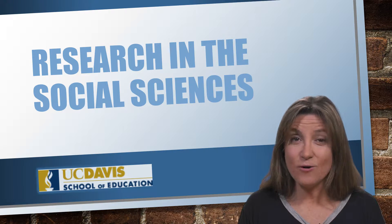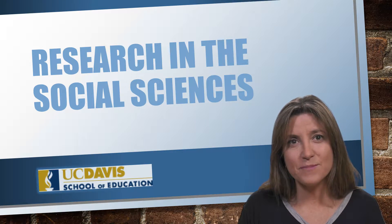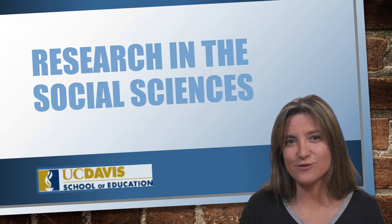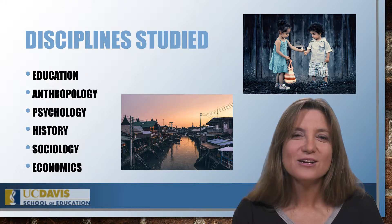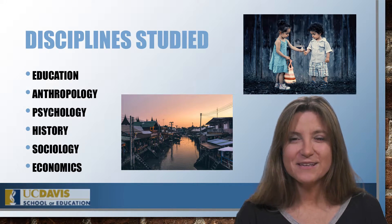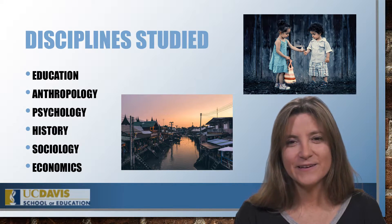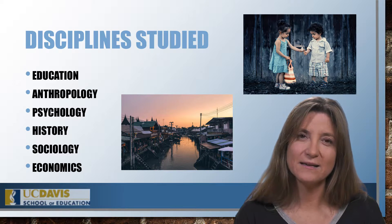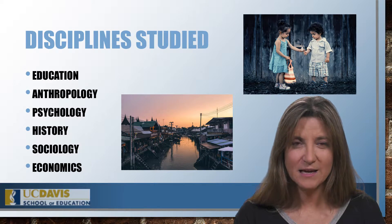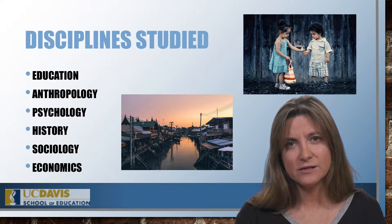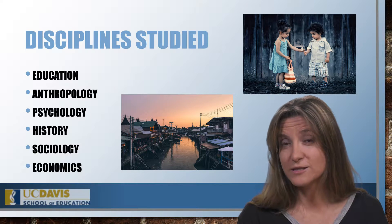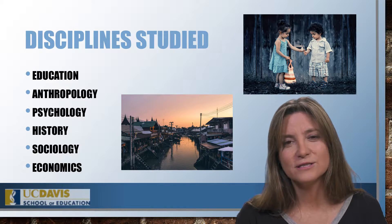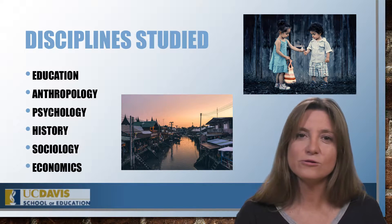In this short video, I'm going to describe the main difference between two broad types of social science research. Social science research is the activity of gathering, analyzing, and interpreting information related to human behavior. There are several disciplines that are part of social sciences, such as education, anthropology, psychology, and also economics.